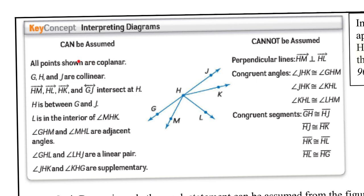So this says you can assume that all points are coplanar. You can assume that G, H, and J are collinear. And you have these rays HM, HL, HK, and then line GJ intersect at H. So yeah, that makes sense. H is like the point that's intersecting with all of them.